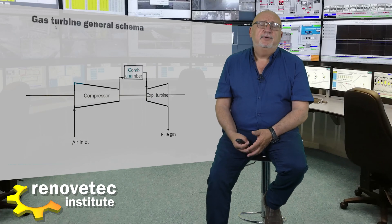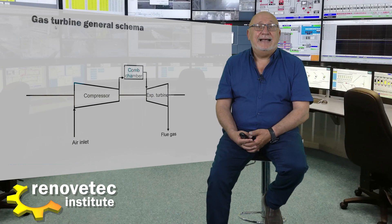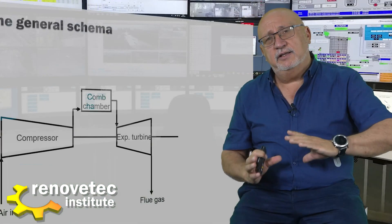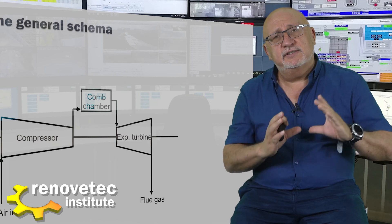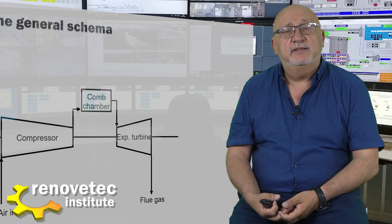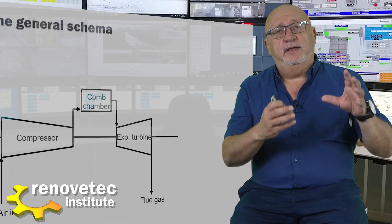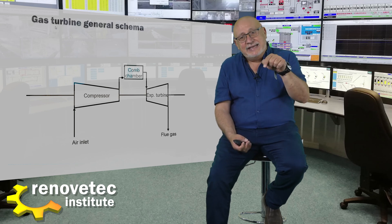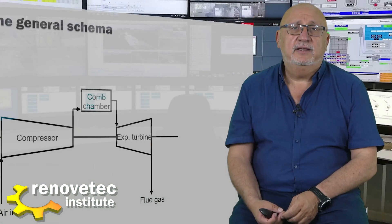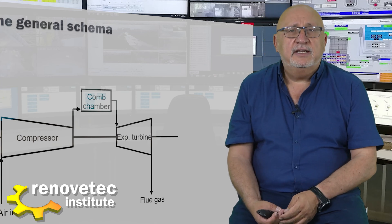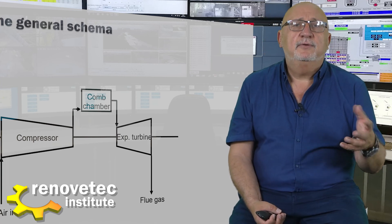The second type is the can-annular gas turbine. We have different cans, and in every one of these cans a complete combustion chamber is installed. In every one of these cans, combustion occurs, and it is inside the can where the energy contained in the fuel is liberated.